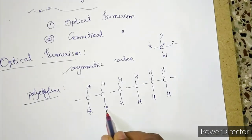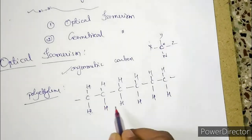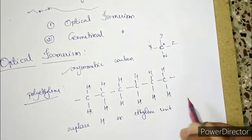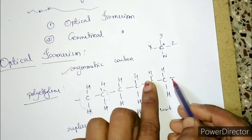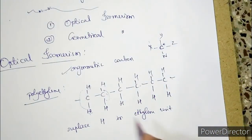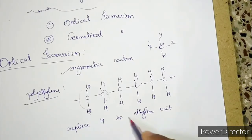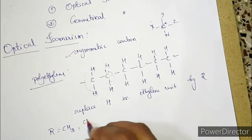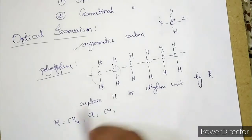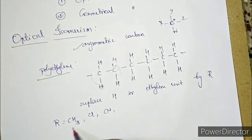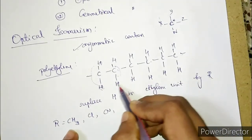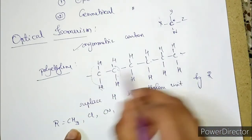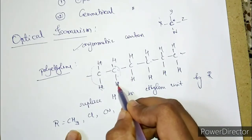Now suppose if I replace the H group in the ethylene unit by R. In the polymer chain we have many ethylene units — first, second, third, and so on. I am replacing one hydrogen in each ethylene unit by some R group, where R may be an alkyl group like CH3, or Cl, or CN. If I replace H by CH3 in every ethylene unit, I end up with polypropylene.